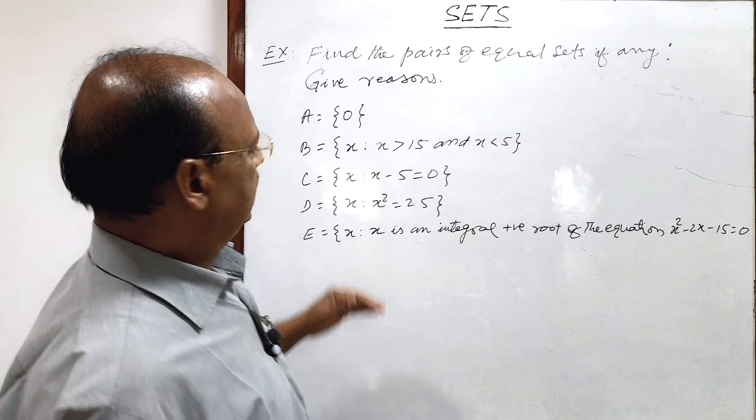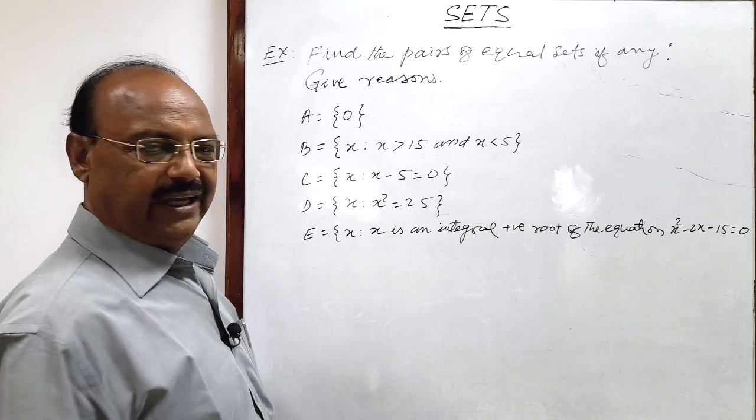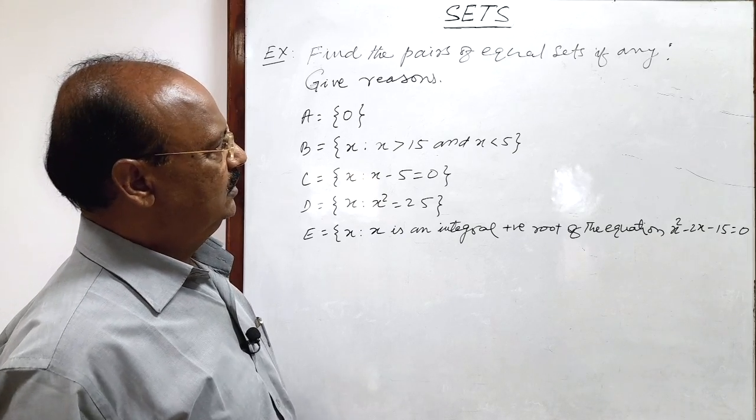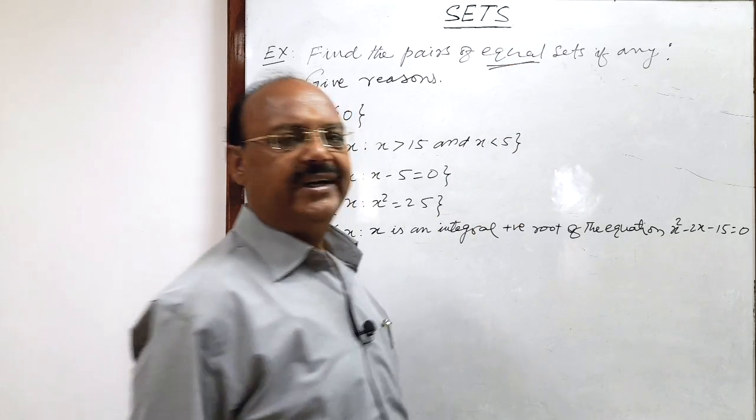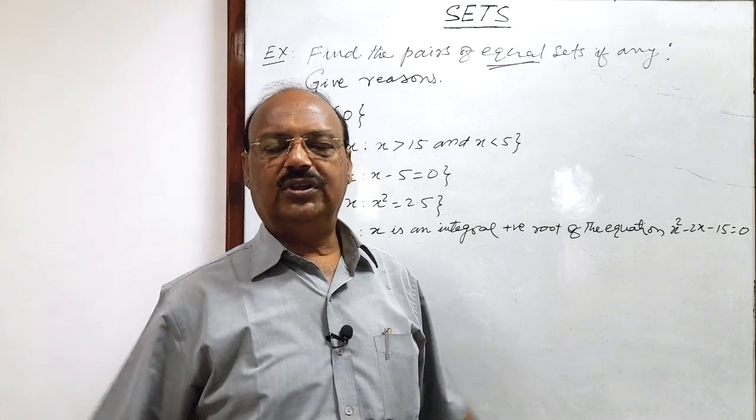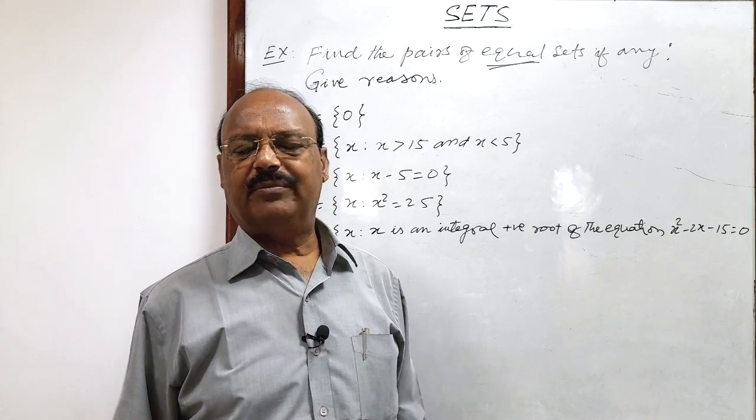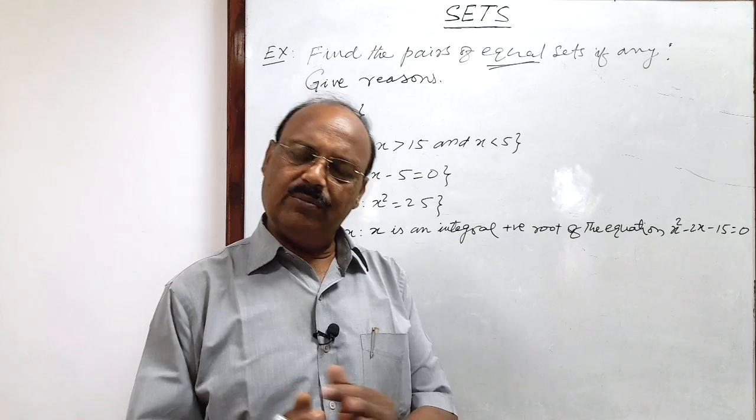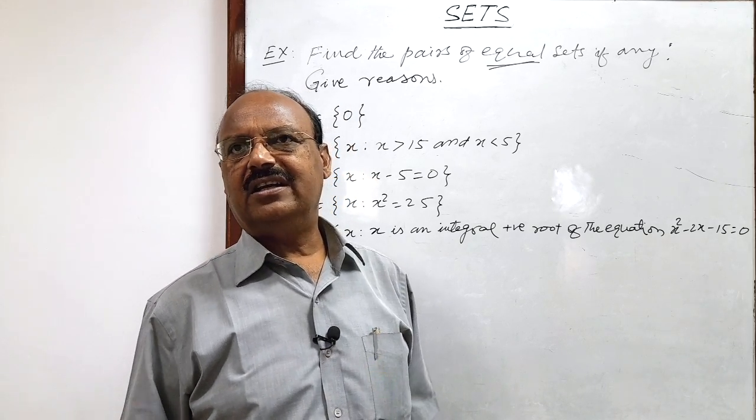So let us see these sets, observe these sets what are the elements, then only we will be able to check the equality of sets. We know two sets are equal if both the sets are having same elements, same number of elements, same number of members as well as same members should be there in both the sets. Then two sets are equal.